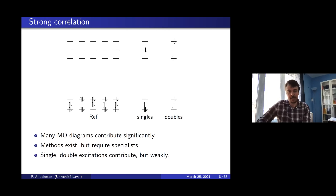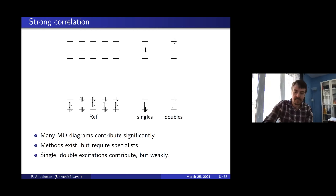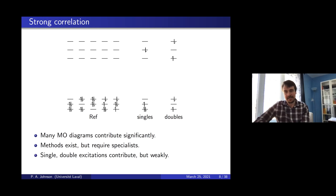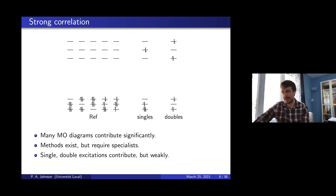Strongly correlated systems are different. There are many molecular orbital diagrams that contribute substantially — there is not one that is dominant, or many contribute equally. Methods exist to treat these systems but they are more difficult to use. This does not fit into the picture of Hartree-Fock plus correction; we need to develop something different. The types of systems we have to look at are not things you would observe in the lab usually — they need to be small enough that we have good reference data and can run calculations against them, because we don't have optimal numerical algorithms yet.